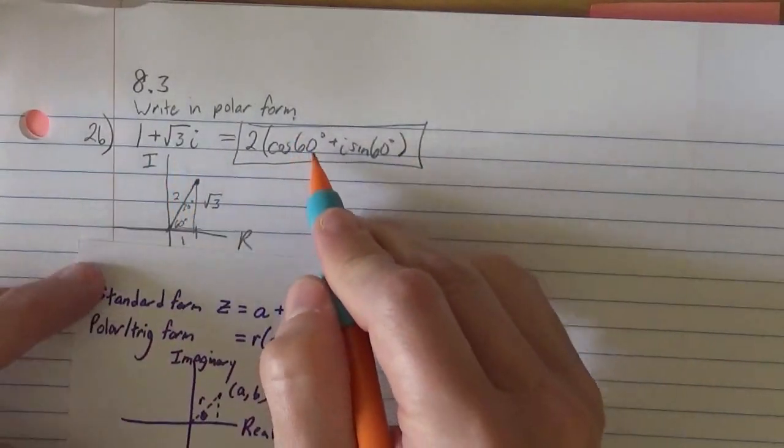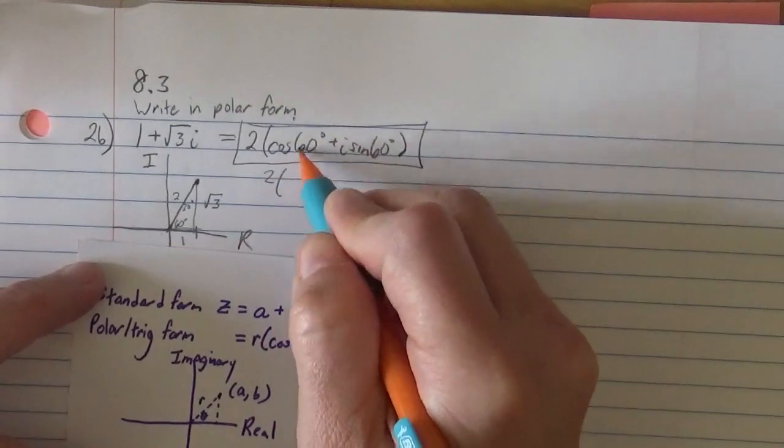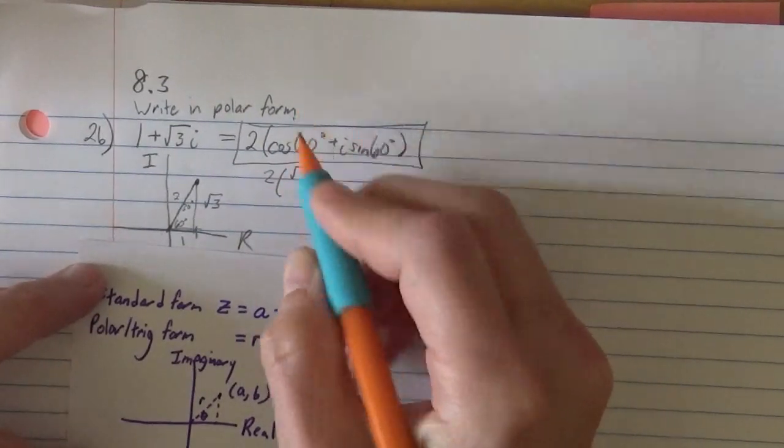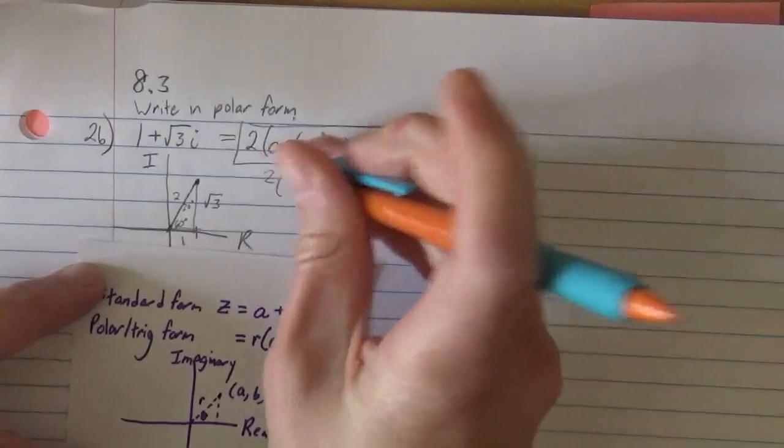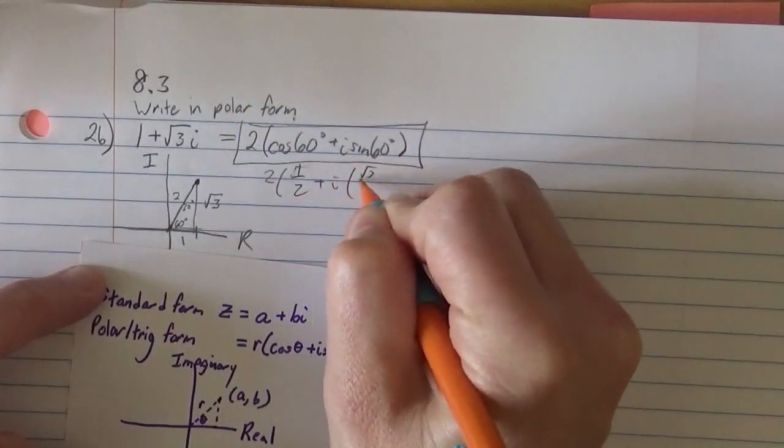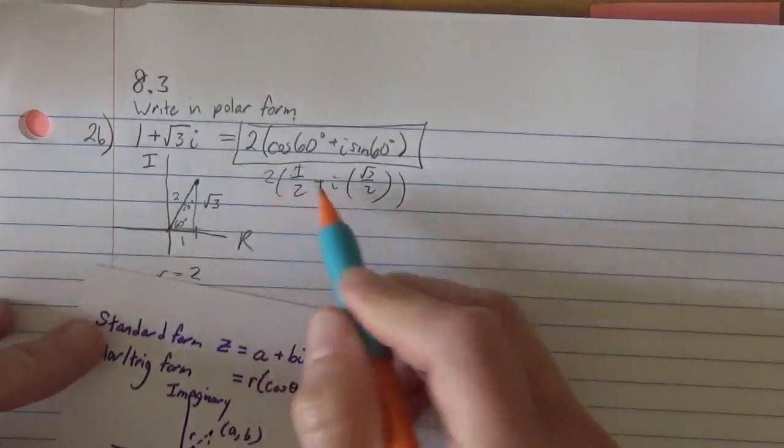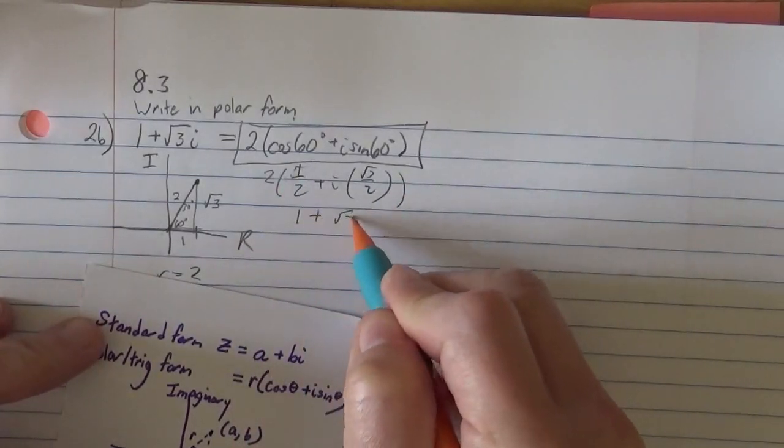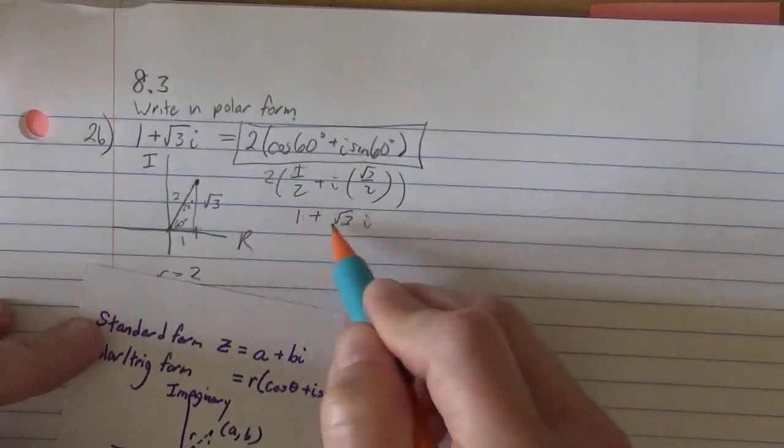If you were to figure those out, cosine of 60 is a half, right? And sine of 60 is root 3 over 2, and distribute back in, you do get 1 plus root 3i.